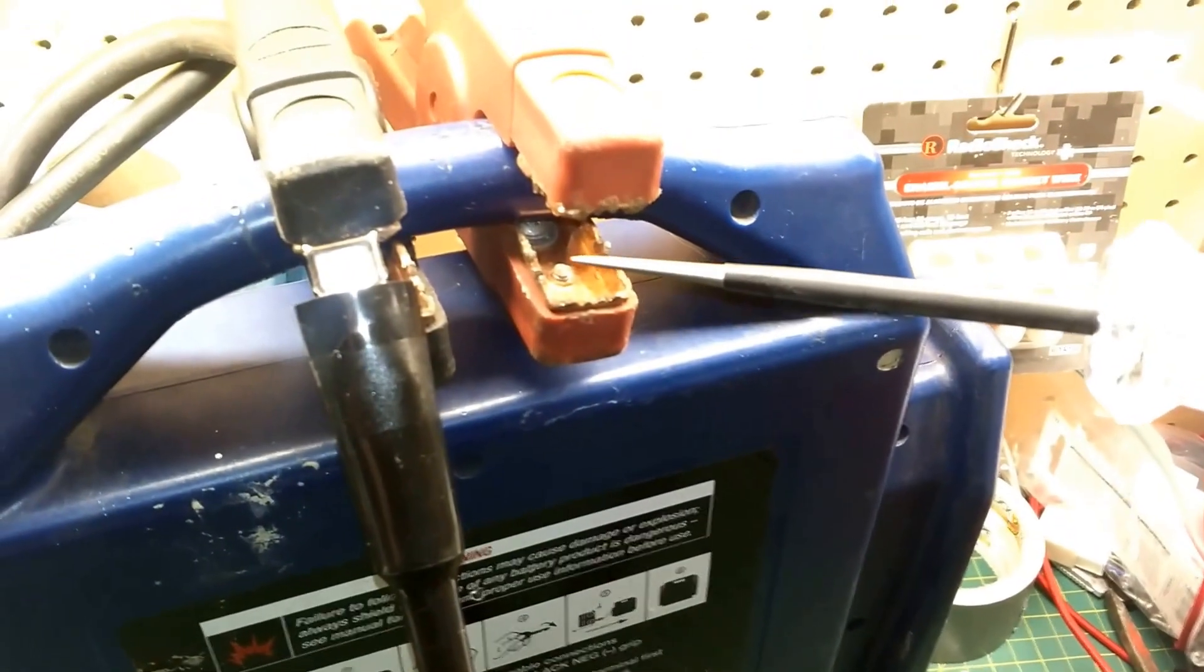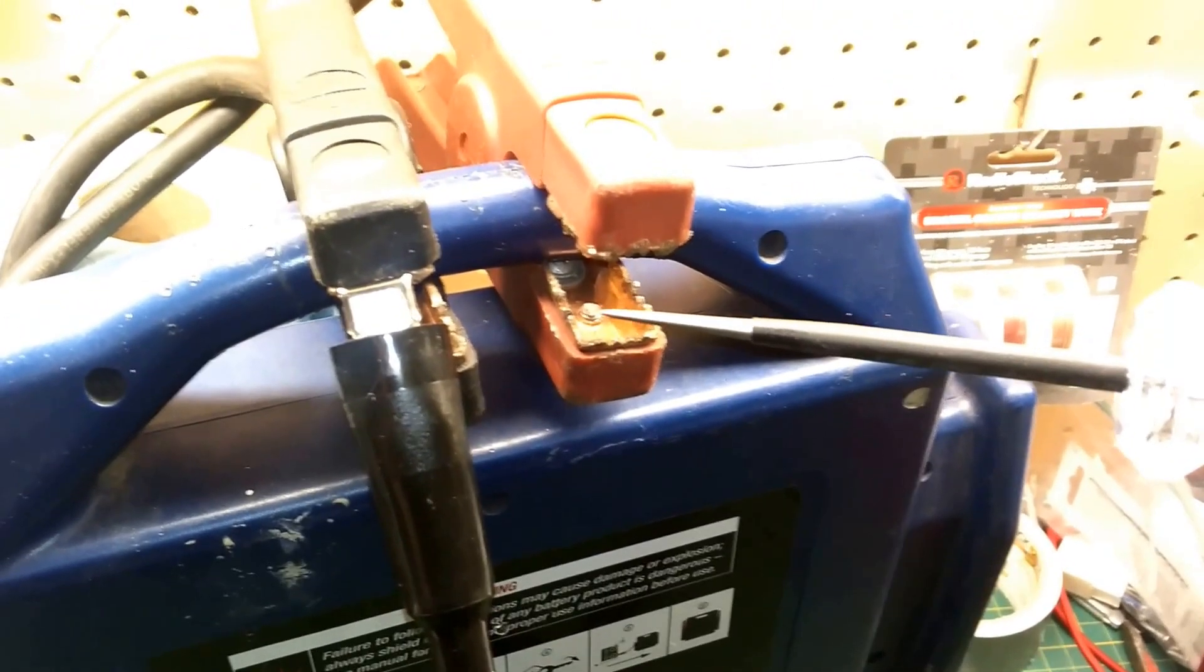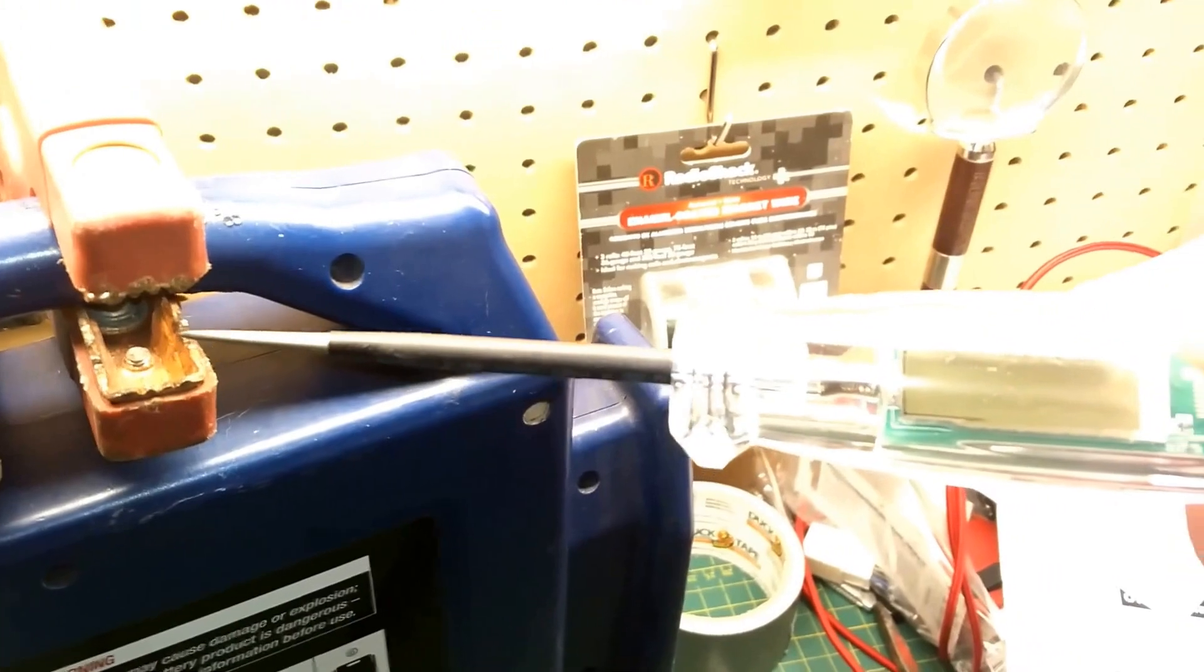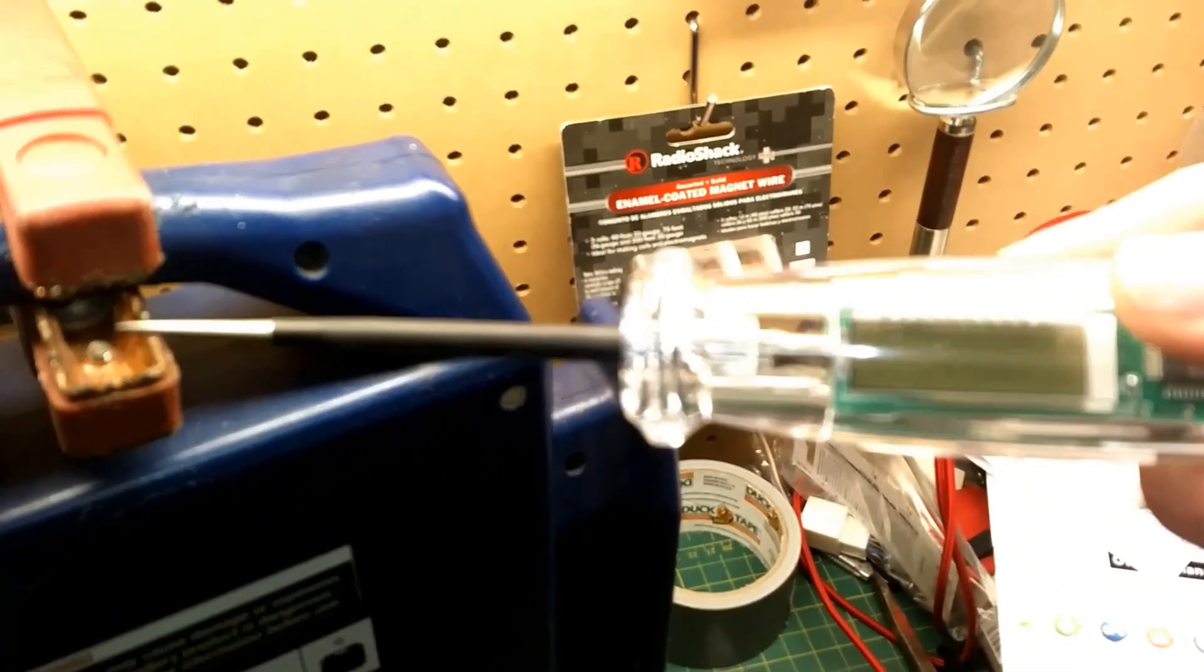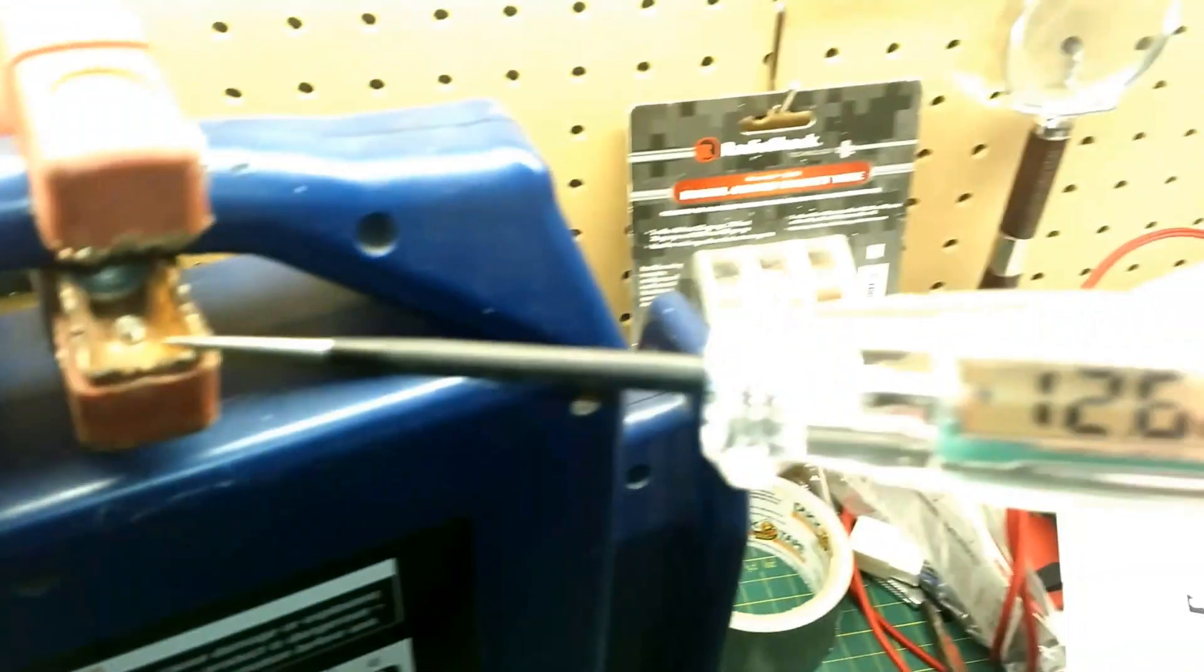Let's go ahead and test this out. I've taken a ground lead and clipped it to the ground on a jump pack. We're going to take a look at the screen inside the actual test light. When we touch a positive wire like we are here, it's